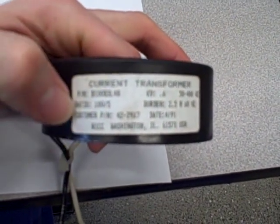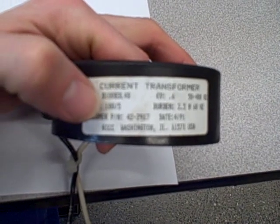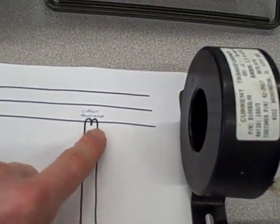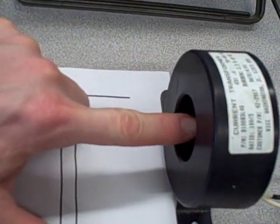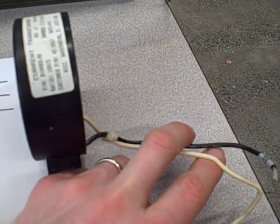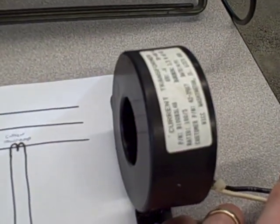This is a current transformer right here. If we take a look at it, we see it actually has a ratio on it right there. The ratio says 100 slash 5, a 100 to 5 ratio. So if this were installed on our power system and our power conductor went through the center of this CT, every 100 amps through that power conductor would induce 5 amps of current in the secondary.